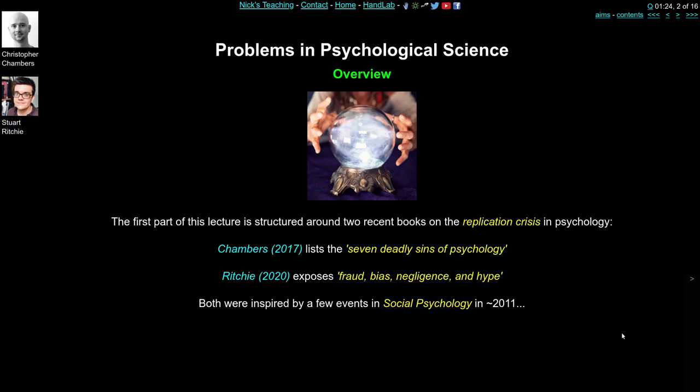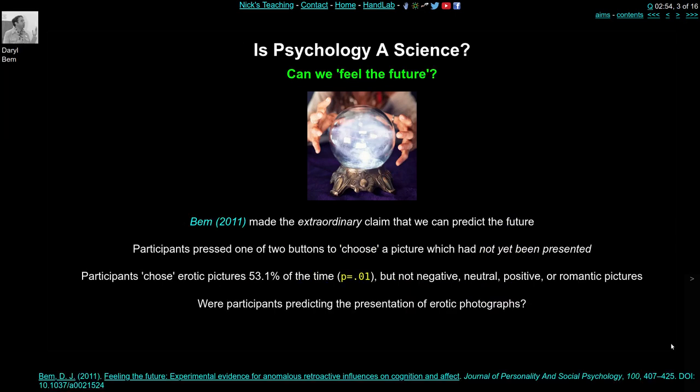Both books were inspired by one particular paper, which we're going to look at right now. There was a paper in 2011 by Daryl Bem making the extraordinary claim that human participants in a psychology experiment can predict the future. In this experiment he reversed the typical series of stimulus and response — in psychology you're very used to presenting people with a stimulus and then asking them to respond by choosing one of two responses.